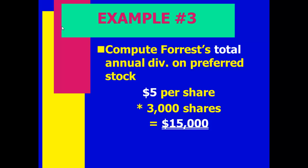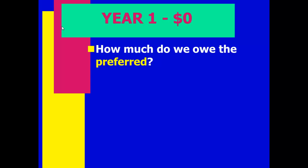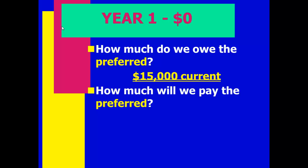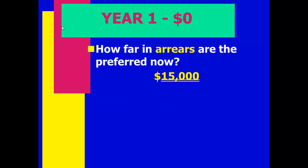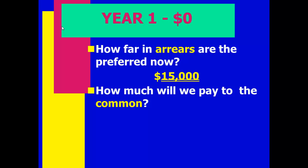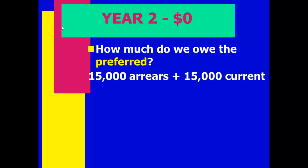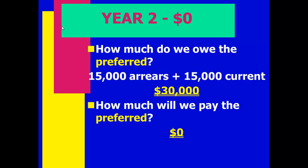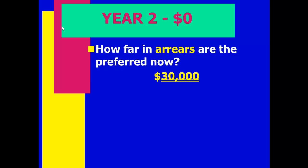Year 1: We have no money. We owe the preferred $15,000, we pay them $0, we're behind by $15,000, and common gets $0. Year 2: We still have no money. We now owe $15,000 from last year plus $15,000 this year — $30,000 total. We pay $0, we're behind by $30,000, and common gets $0.